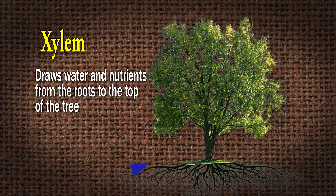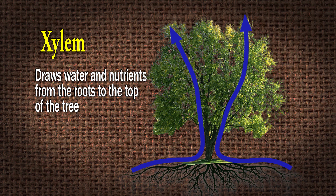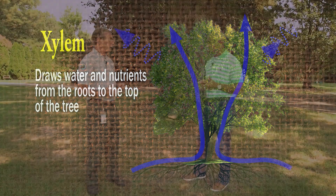Now let's talk about the different layers of a tree — the xylem and the phloem. Starting with the xylem: it works with osmosis and is on the interior part of the cambium. It pulls water and minerals from the soil, takes them up through the tree all the way to the tips of the leaves, then goes through the transpiration process where moisture is released through the pores of the leaf.